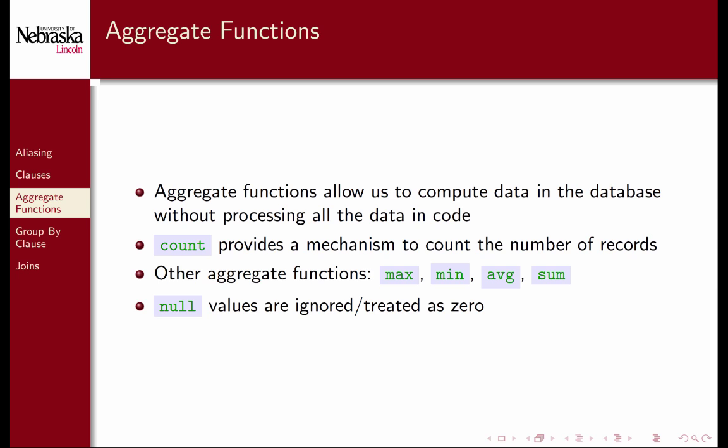SQL provides several aggregate functions that allow you to compute some results on the data in the database. For example, the count function can be used to compute the number of matching records. The max, min, average, and sum functions can be used to compute various values. In general, null values are ignored or treated as zero when using aggregate functions. Let's try a few examples.